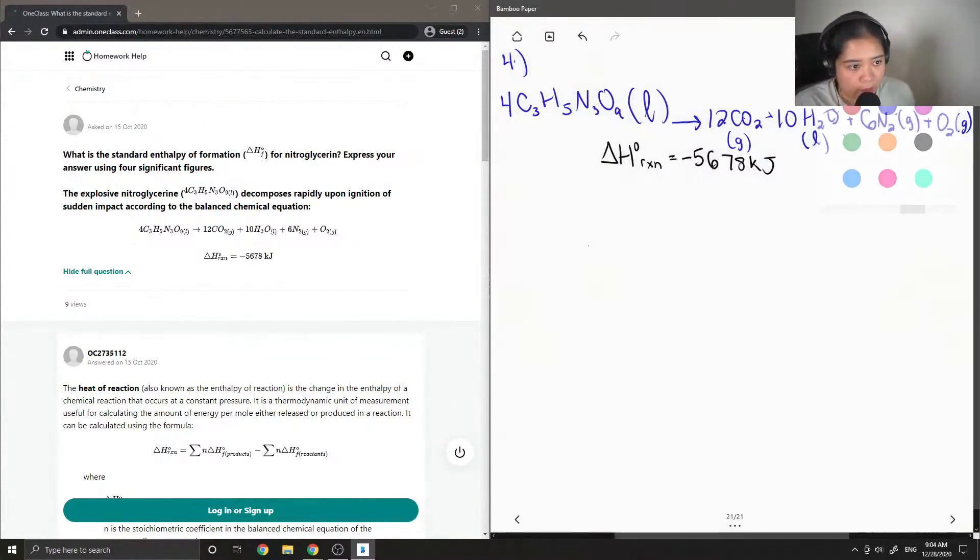So to answer this question, first let's recall how to calculate the enthalpy of the reaction. So this is equal to the sum of N times the enthalpy of formation of our products, and then this is subtracted by the sum of N times the enthalpy of formation of all of our reactants.